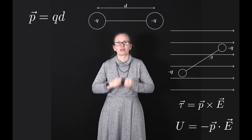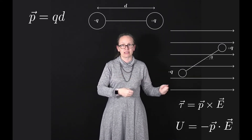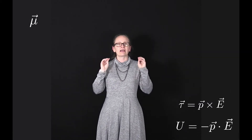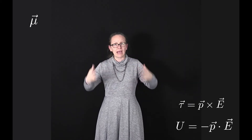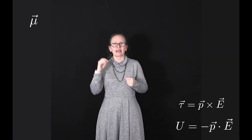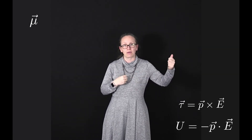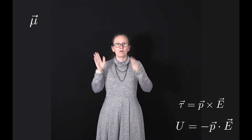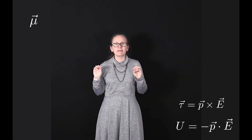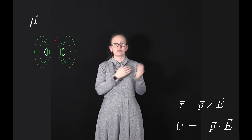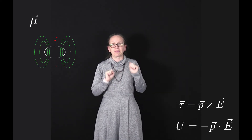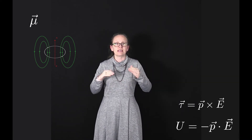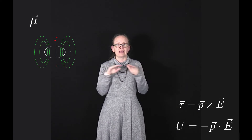We have very similar relationships for magnetic dipole moments. Magnetic dipole moments are represented by the Greek letter mu and are also vectors. Magnets are always found as a dipole — we can't have a north pole separate from a south pole. Loops of current, for example in a solenoid, form a magnet with a north and south pole. So we can picture magnetic dipole moments as loops of current. The direction of the magnetic dipole moment is the same as the direction of the magnetic field, which is perpendicular to the plane of the loop.